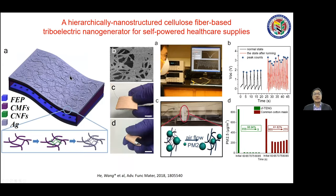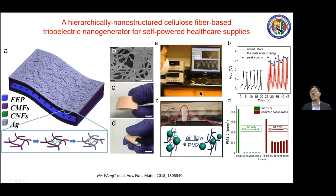We also use paper-based composite materials for air filtering. We can filter dust and PM2.5 particles in the air. Our TNG mask has much better performance than a cotton-based mask, achieving 98.94% removal efficiency. This can also be utilized for antibacterial applications and potentially antivirus applications as well.